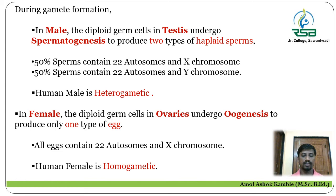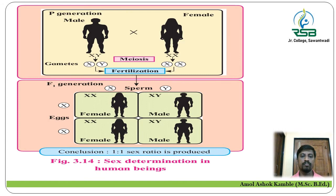Let us discuss the mechanism of sex determination in human beings with a diagram. The human male has XY chromosomes and is heterogametic, producing X gametes and Y gametes. The human female has XX chromosomes and produces only X gametes.